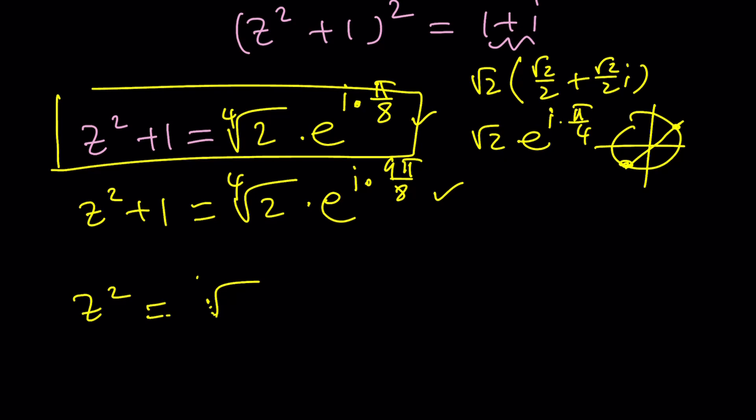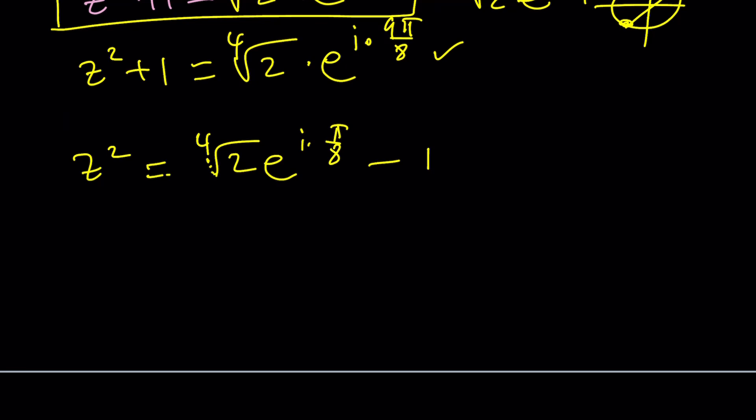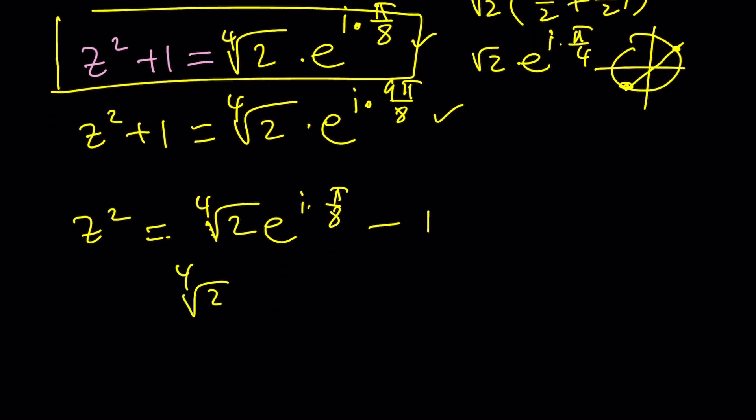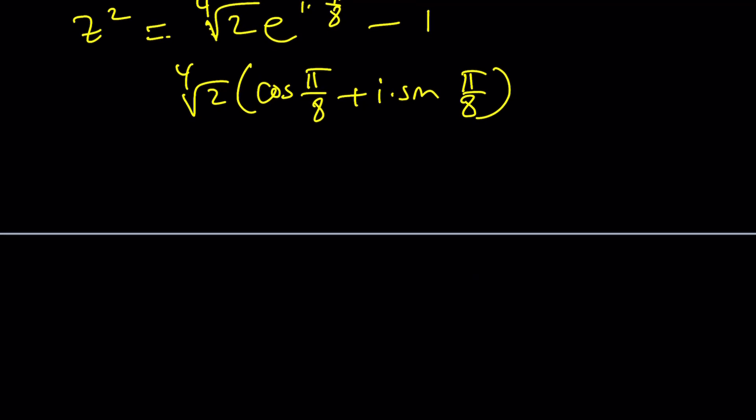z squared is this minus 1. And then you will take the square root. But before we do take the square root, I kind of need a nice form for this. One way to do it, you kind of turn this into cosine pi over 8 plus i sine pi over 8. Then you need to find the values of sine and cosine pi over 8. And let me show you a quick trick.